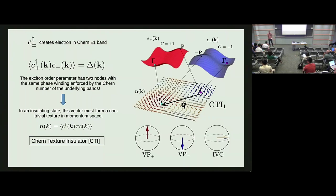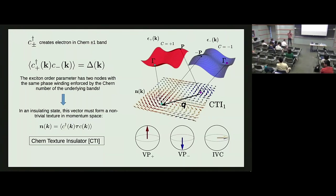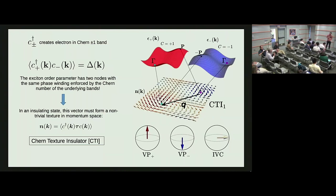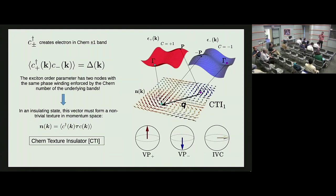Q: Is there a fractional generalization where you build excitons from fractionalized anyons rather than electrons—a composite fermion picture? A: Very interesting question. I think the answer is that I don't see immediately any reason why not—there would be an additional gauge field involved, but on the top of my head I don't see any reason why that would not work.